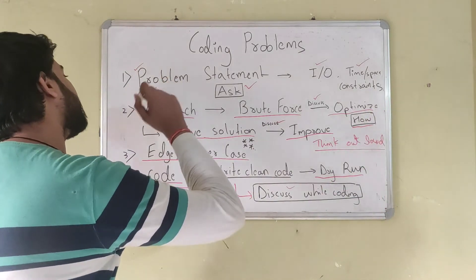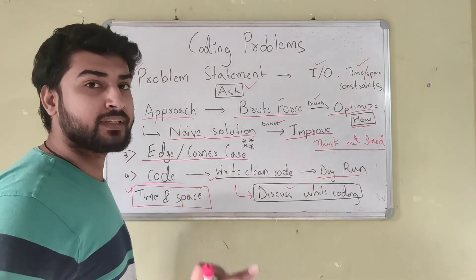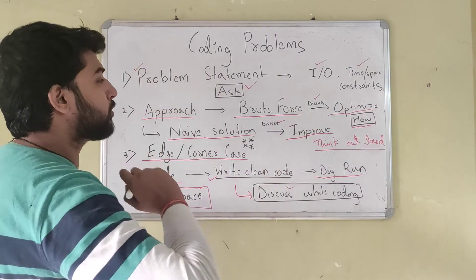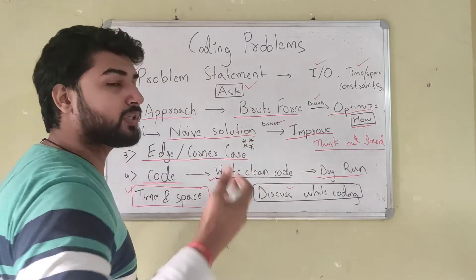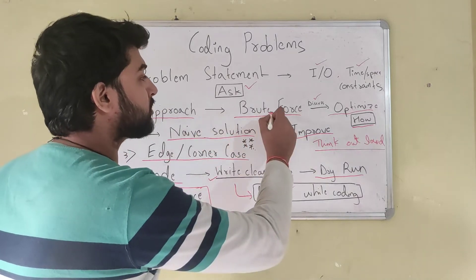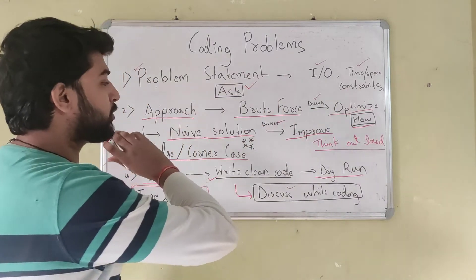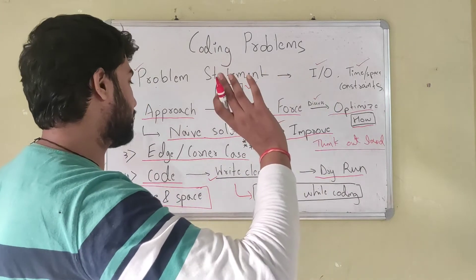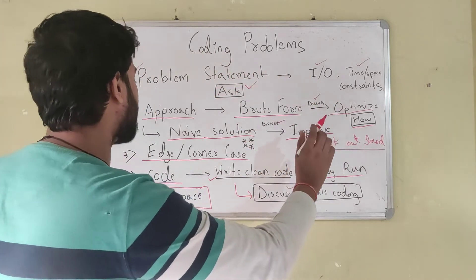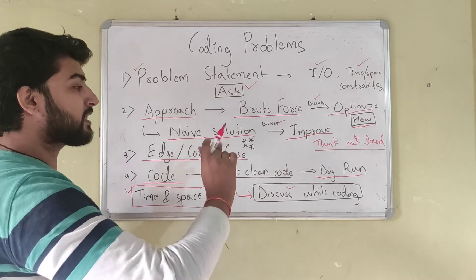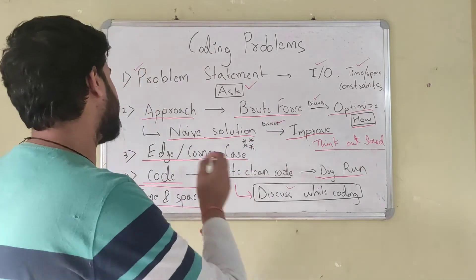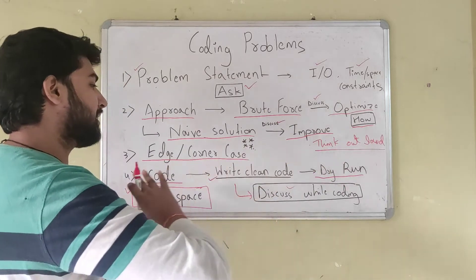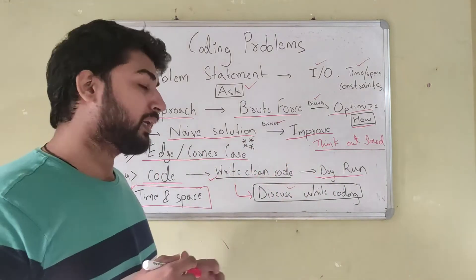To reiterate: be careful with the problem statement, understand everything given. Think of an approach — if you know it, give brute force then optimize; if you don't, give a naive solution and discuss to improve. Think out loud, think of edge cases and corner cases, write clean code, discuss while coding, dry run, and you're done.